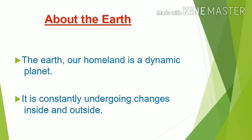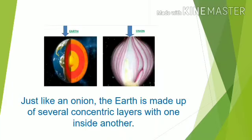Students, in this slide you can see about the Earth. The Earth, our homeland, is a dynamic planet. It is constantly undergoing changes inside and outside. Our Earth is just like an onion. The Earth is made up of several concentric layers with one inside another.